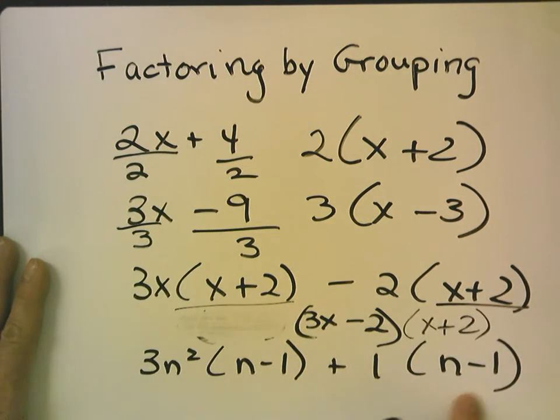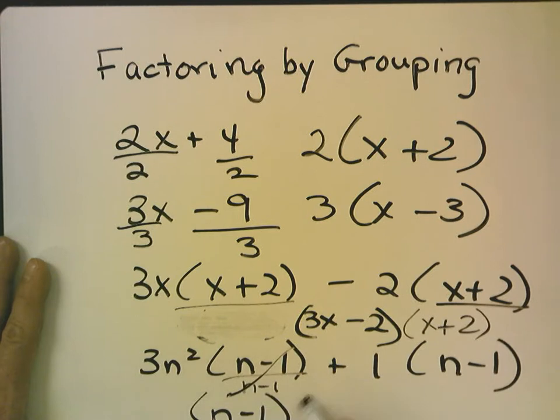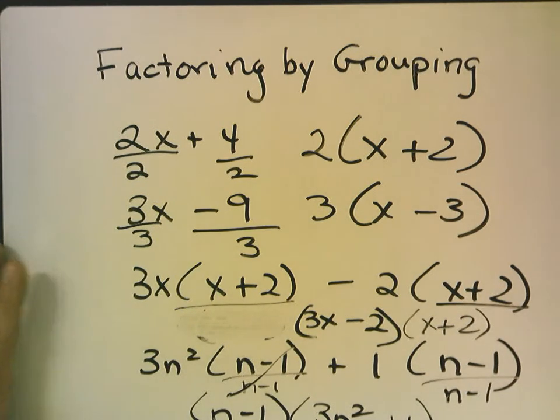Okay, now for this one, I pull out an n minus 1. And what do I have left when I pull out n minus 1? I have 3n squared, and here I have plus 1. So, now, if I multiply 3n by n plus 1, and I multiply 1 by n plus 1.